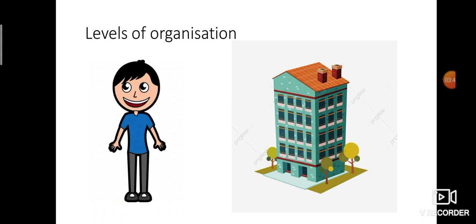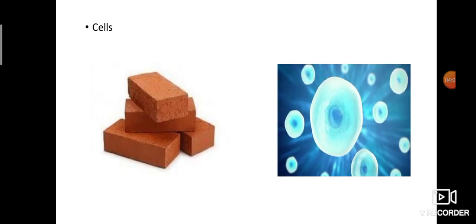We know we have so many organs — eyes, ears, nose — but beyond the organs, what are these organs made up of? Compare with the building so we can easily understand. To construct a building, first of all we need bricks. Like that, to make our human body, it is made up of cells. So the basic functional unit of our human body is cells.